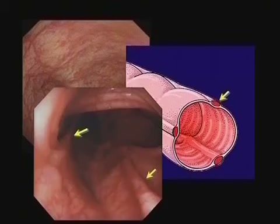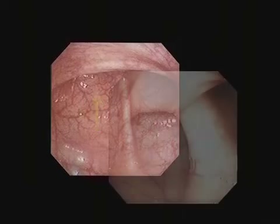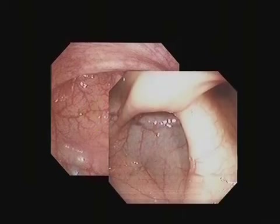Sometimes two taeniae are visible. At acute bends in large colons, steer alongside the longitudinal fold, which may sometimes mean acute angulation of the scope.